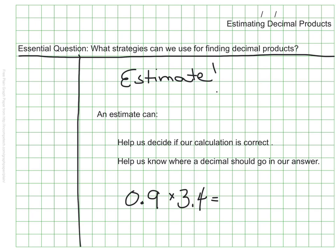I also know that 3.4 is really close to 3, but it's also close to 3.5. So I could think of this as 1 times 3.5. Of course, without even knowing an algorithm for multiplying decimals, I know a good estimate here would be 3.5, because any number times 1 is still the same number.